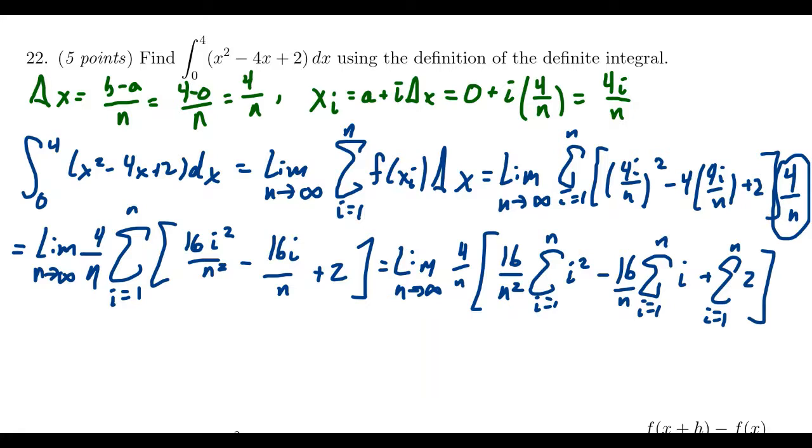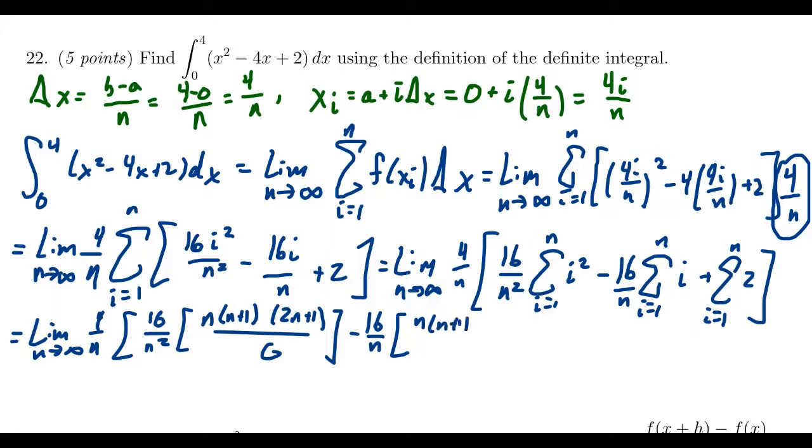And so this is the moment where we're going to use our summation formulas that we have learned previously. And so putting those in here, we're going to get the limit as n goes to infinity of 4 over n. So do these one at a time, so 16 over n squared. So the sum from where i ranges from 1 to n of i squared. This is a formula that you're going to need to know. This is going to look like n times n plus 1 times 2n plus 1 all over 6.